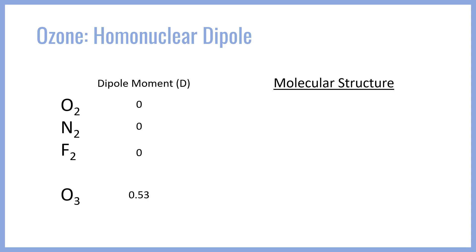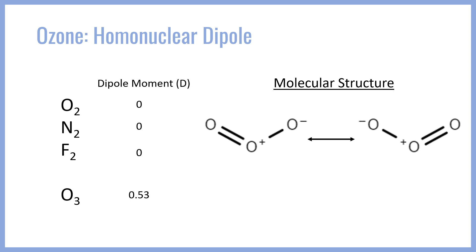If we look at the molecular structure of ozone, we see the atoms carry positive and negative formal charges. Ozone has two resonance structures — one where the oxygen on the right carries the negative, and one where the oxygen on the left carries the negative. In either case, the central oxygen carries a positive formal charge. Since the real molecule is a superposition of these two resonance structures, the left and right oxygens carry partial negative charges, and the central oxygen carries a partial positive charge — even though all oxygens are equally electronegative. The overall molecular dipole points upward due to these resonance-derived formal charges.